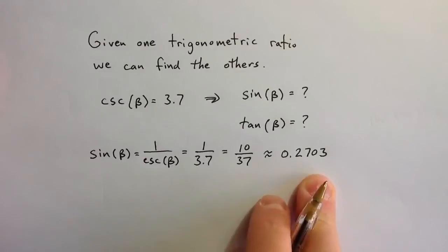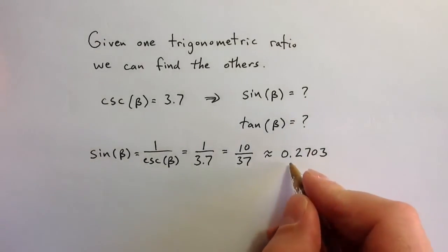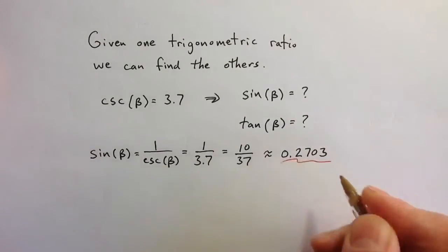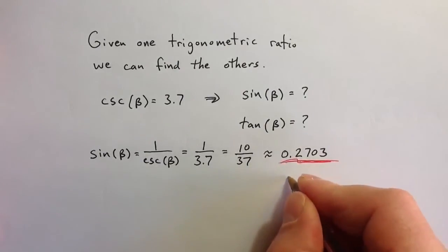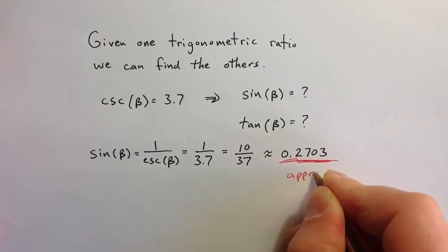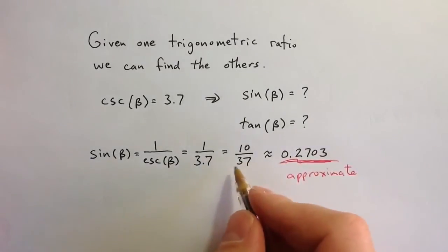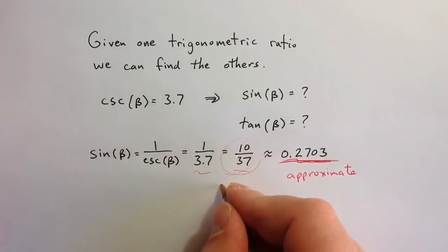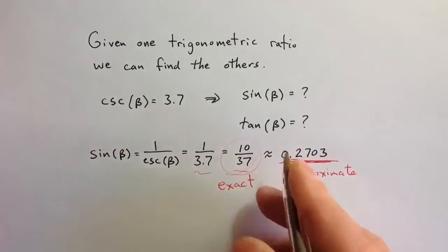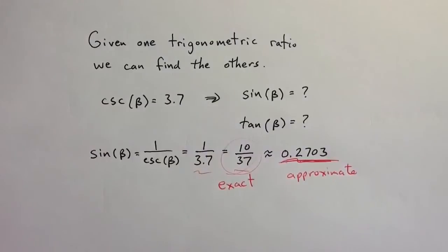Something that's important, maybe useful to mention, this decimal value 0.2703 is an approximate answer, whereas both of these, but especially the fraction, would be an exact answer, the more proper fraction with whole numbers.